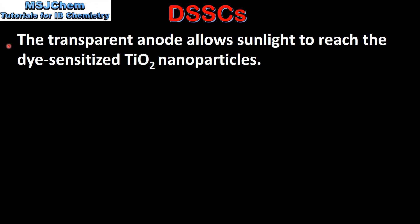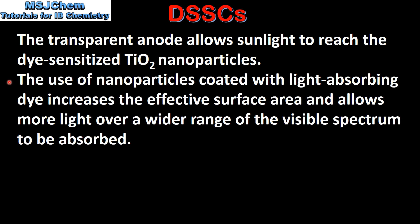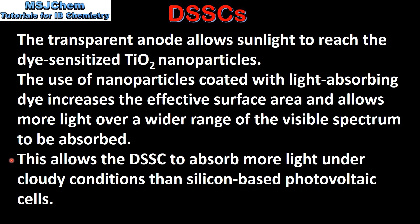The transparent anode allows sunlight to reach the dye-sensitized titanium dioxide nanoparticles. The use of nanoparticles coated with light-absorbing dye increases the effective surface area and allows more light over a wider range of the visible spectrum to be absorbed. This allows the DSSC to absorb more light under cloudy conditions than silicon-based photovoltaic cells.